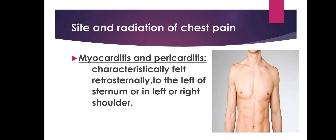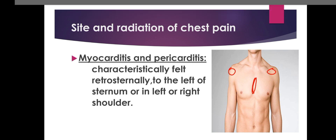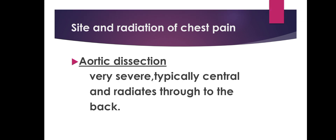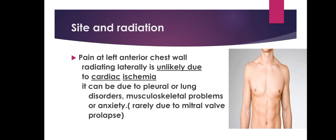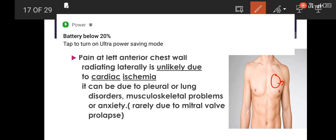The pain of myocarditis and pericarditis is characteristically felt retrosternally — just behind the sternum — to the left of the sternum, or in the right or left shoulder due to irritation of the phrenic nerves. The severe pain of aortic dissection is typically central and radiates through to the back. Pain felt at the left anterior chest wall radiating laterally is very unlikely to be cardiac ischemia; it can be pleural, lung, musculoskeletal, anxiety, or rarely mitral valve prolapse.